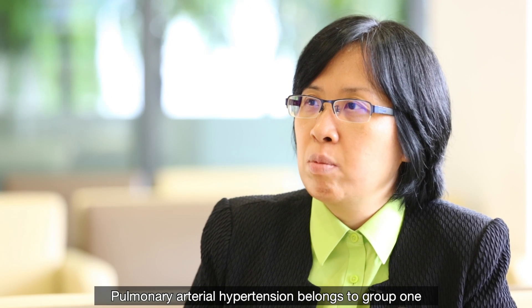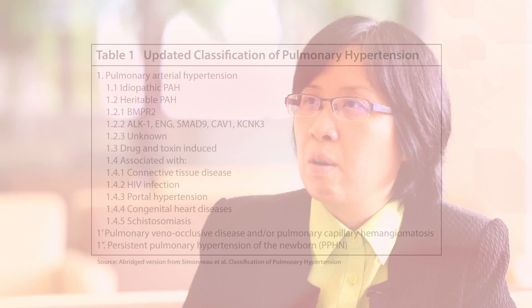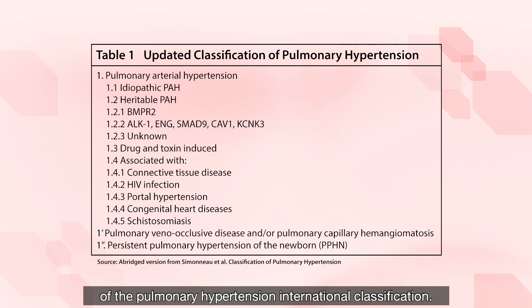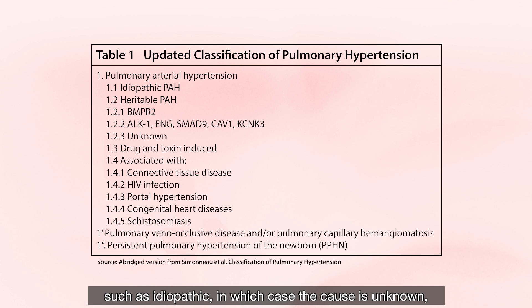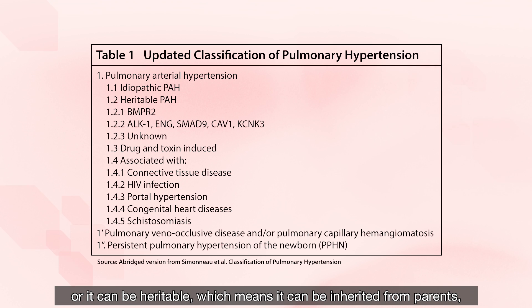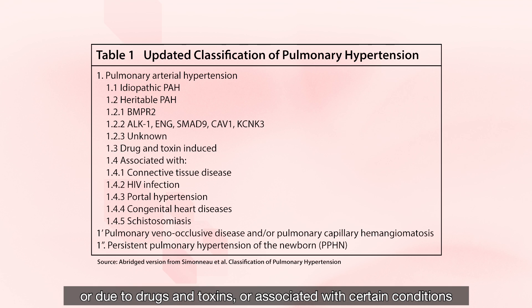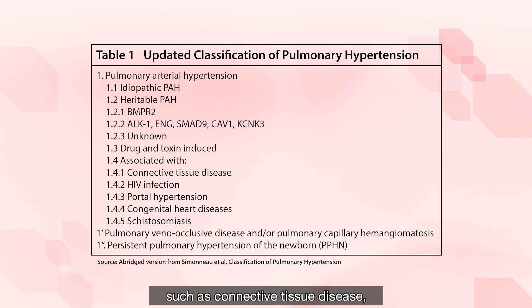PAH belongs to Group 1 of the PAH international classification. This Group 1, which is PAH, has several subgroups, such as idiopathic, in which case the cause is unknown, or it can be heritable, which means it can be inherited from parents, or due to drugs and toxins, or associated with certain conditions.